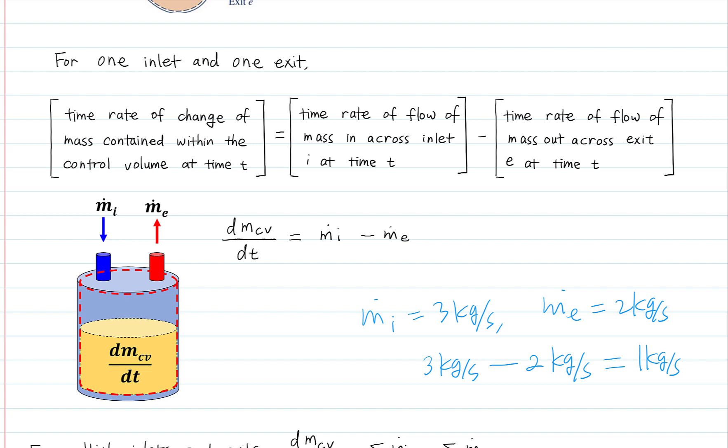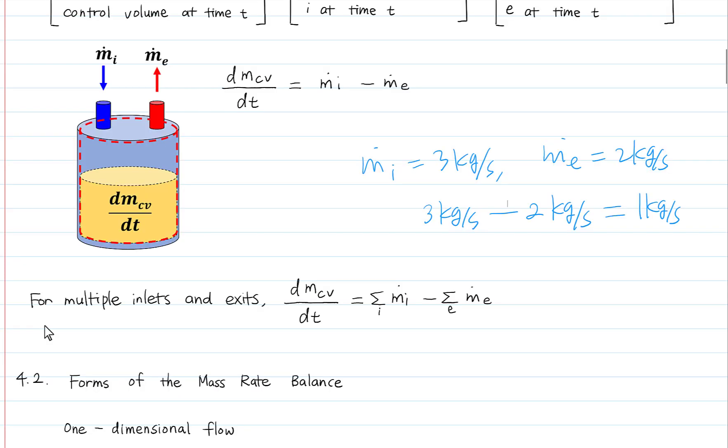If the mass flow rate M-dot in is equal to M-dot out, the mass of the system remains constant. The control volume may have several inlets and outlets and the summation is used to evaluate the total mass transfer across the system.